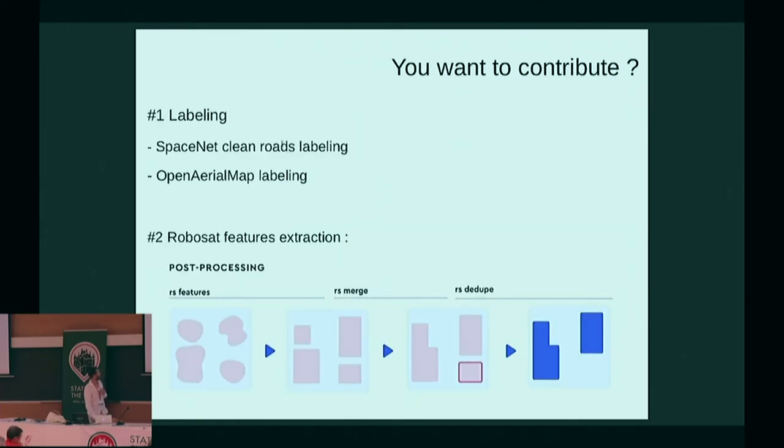If you want to contribute, the labeling itself could be really interesting on SpaceNet, for instance, because it's the best available imagery provided. But even if it's good for buildings, it's really poor for the roads. So if we want to have segmentation on roads, a SpaceNet clean roads labeling could be really nice. Everything we can do on OpenArialMap labeling will help too. The other thing that could be nice is right now the RoboSat application is really brand new. The post-processing is something we just began on this application, so everything could help to post-process the features.